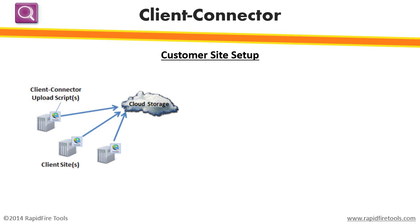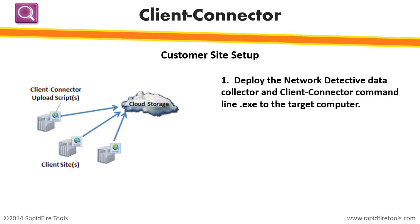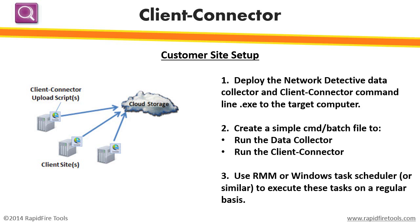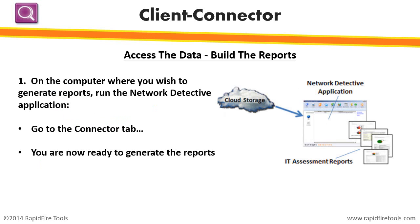Using Client Connector is easy. Deploy the data collector and the Client Connector to your client site — do this manually or via your RMM tool. Set up your RMM script or CMD file with the runtime parameters for the data collector and the Client Connector. Once the scans have completed, Client Connector will transmit them to our secure cloud storage repository. When you or your team members open the Network Detective application, all of the scan files will be available for download. You will then be ready to build your reports.